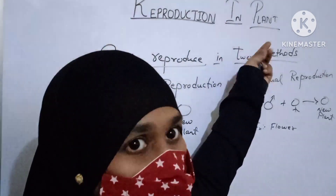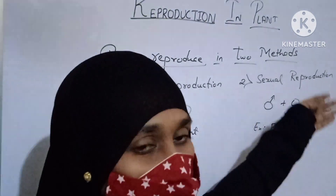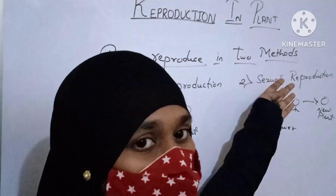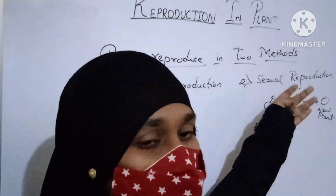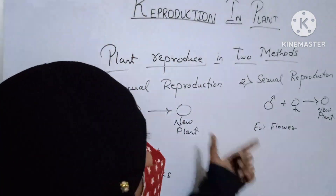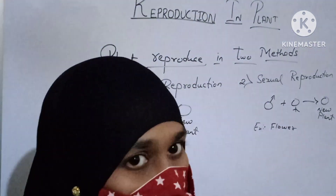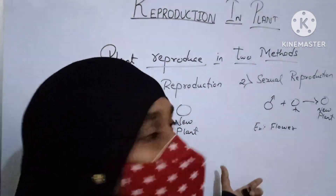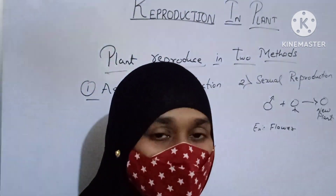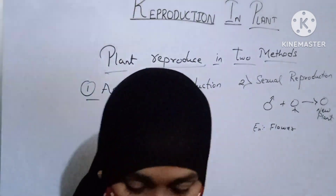To summarize: reproduction is the production of a new plant. A living thing produces a new one of its own kind. There are two methods — asexual reproduction and sexual reproduction. This has been a brief explanation of reproduction in plants. Thank you. If you like this video, please like and subscribe.